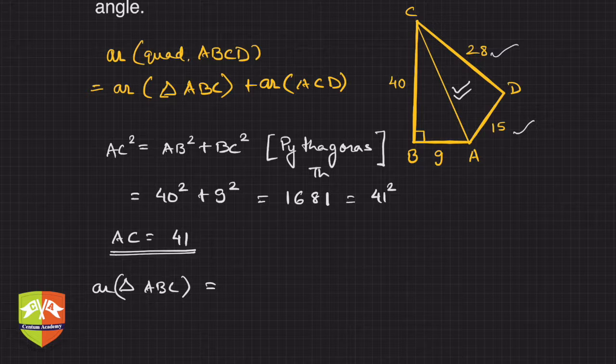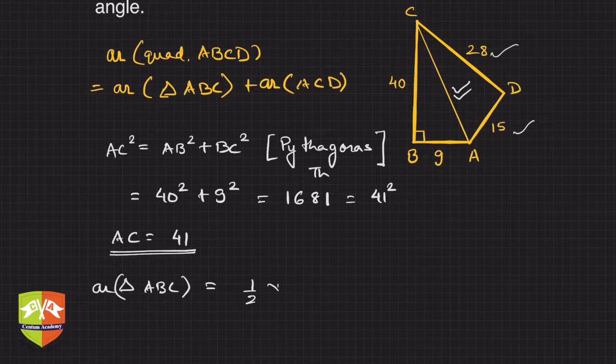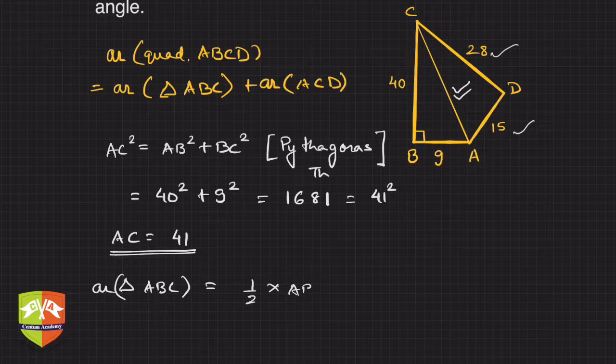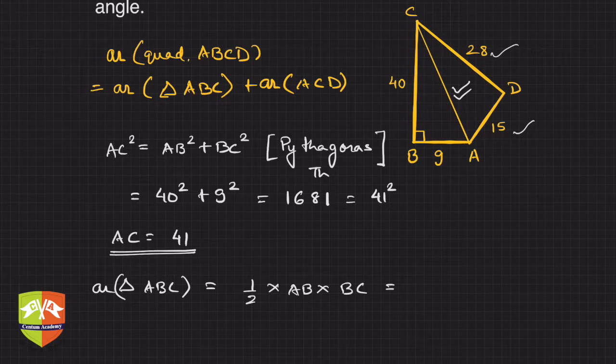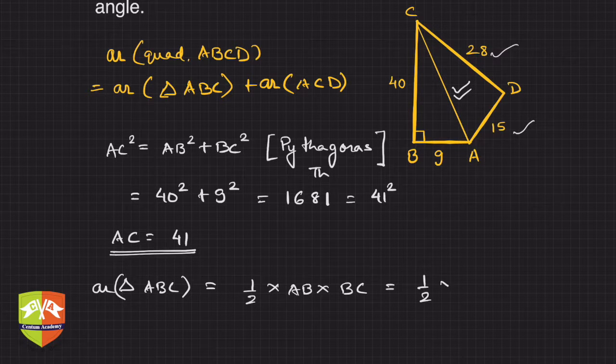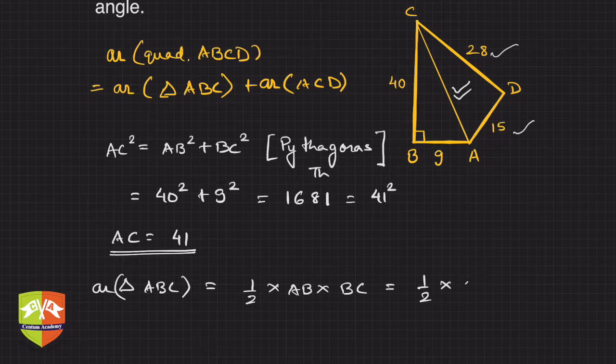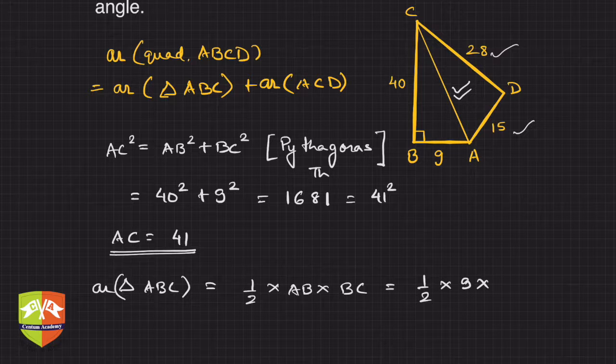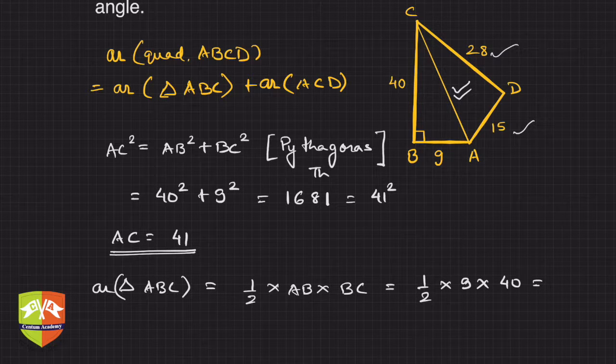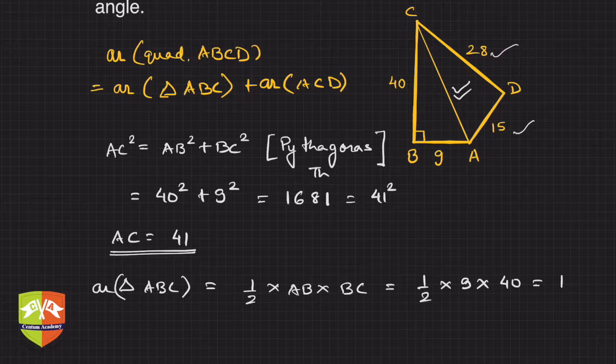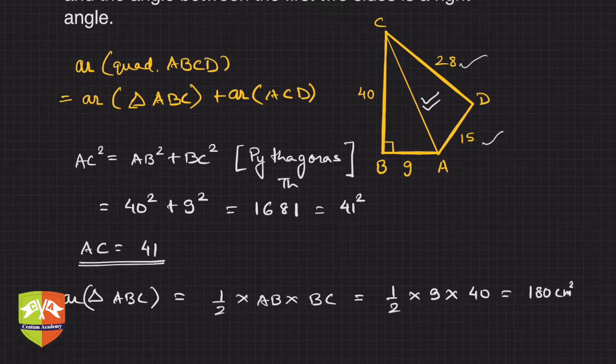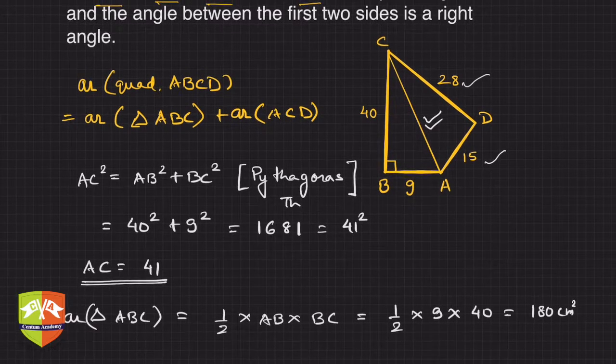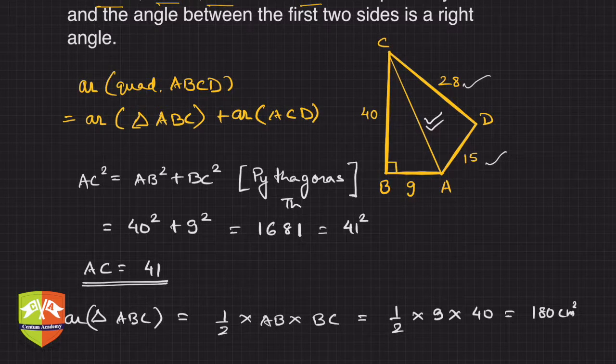Let's find the area of triangle ABC first—a low-hanging fruit. This is nothing but half times base times height. So it's half times AB, which is 9, times BC, which is 40. So 20 times 9 equals 180 centimeter squared.